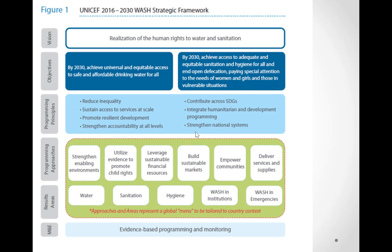Here we are seeing UNICEF's 2016 to 2030 WASH strategic framework. The WASH strategy's objectives are: by 2030, achieve universal and equitable access to safe and affordable drinking water for all; and by 2030, achieve access to adequate and equitable sanitation and hygiene for all, ending open defecation, with special attention to the needs of women and girls and those in vulnerable situations. These objectives align with Sustainable Development Goal number six.